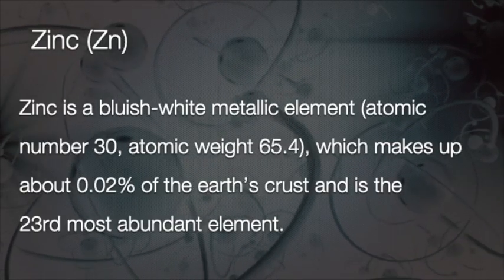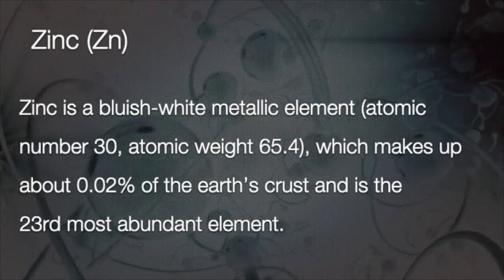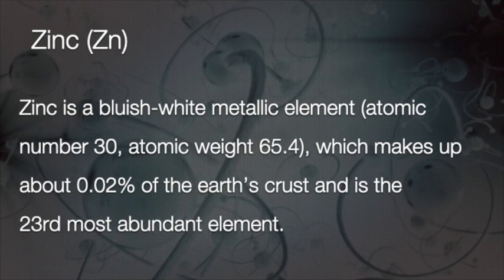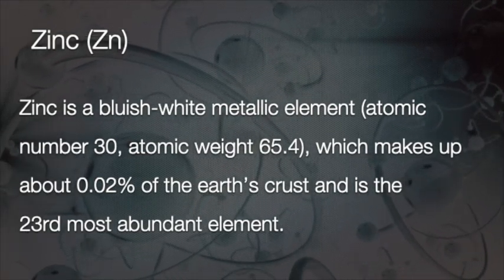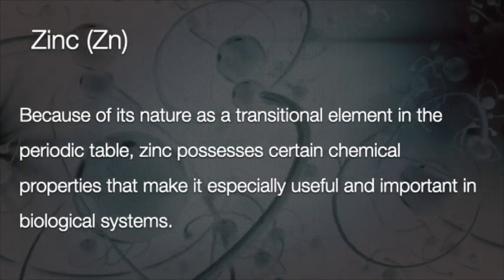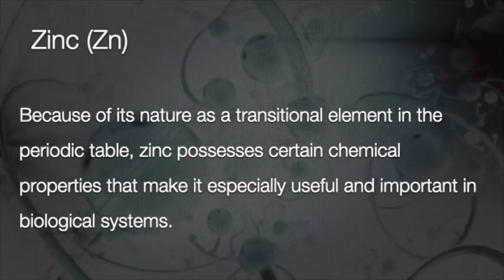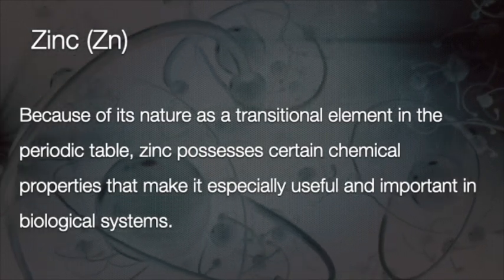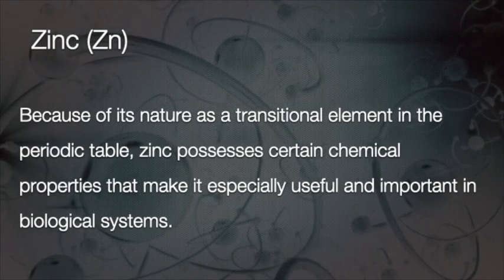Zinc is a bluish-white metallic element with an atomic number of 30 and atomic weight of 65.4, which makes up about 0.02% of the earth's crust and is the 23rd most abundant element. Because of its nature as a transitional element in the periodic table, Zinc possesses certain chemical properties that make it especially useful and important in biological systems.